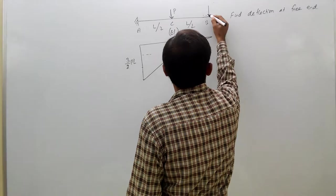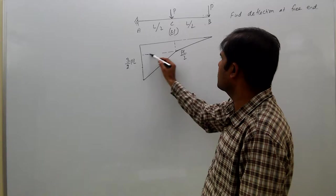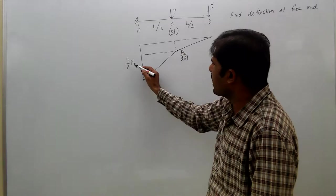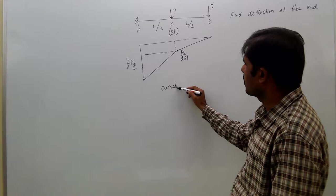So now this is the bending moment diagram. If you divide this with EI you will get directly the curvature diagram.